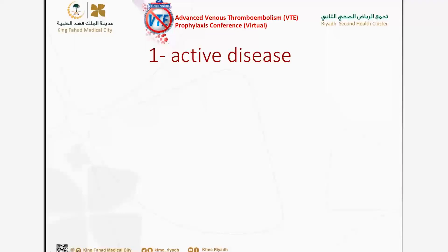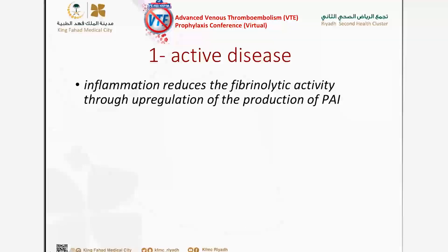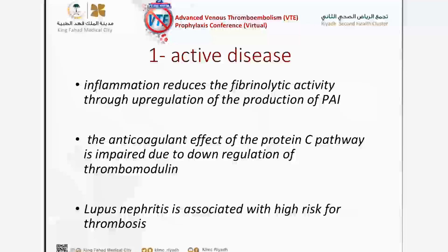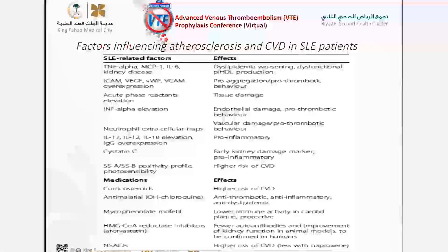Let us explore these risk factors that need to be addressed when we are managing lupus patients. First of all, it's active disease. Inflammation reduces fibrinolytic activity by upregulation of plasminogen activator inhibitor production. Also, the anticoagulant effect of the protein C pathway is impaired in lupus patients due to downregulation of thrombomodulin. Lupus nephritis is considered an independent risk factor for both arterial and venous thrombosis. Several pro-inflammatory cytokines — including TNF-alpha, ICAM, VCAM, and interferon-alpha — play a major role in thrombosis and atherosclerosis.